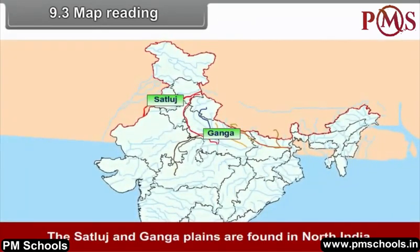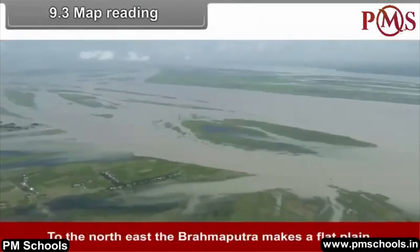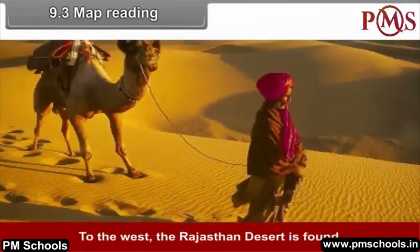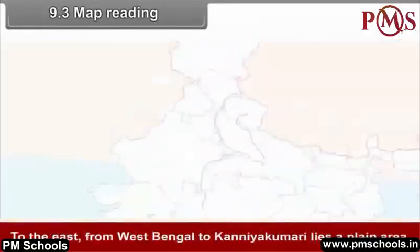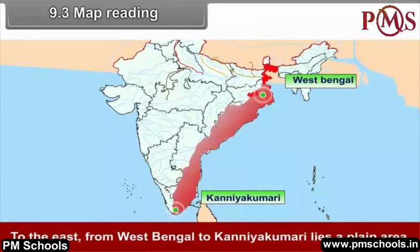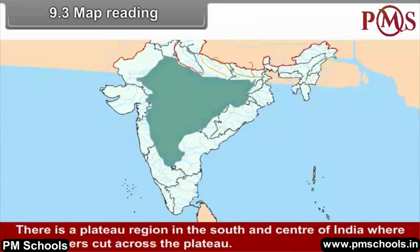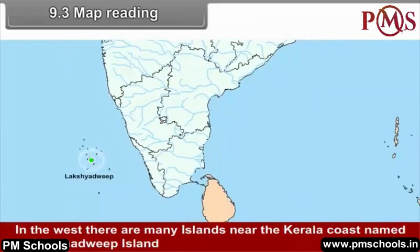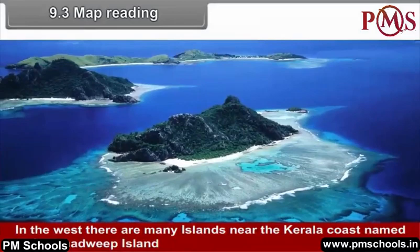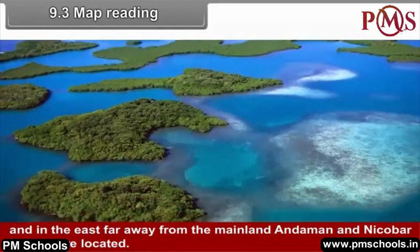The Sutlej and Ganga plains are found in north India. To the north east, the Brahmaputra makes a flat plain. To the west, the Rajasthan desert is found. The Rann of Kutch is a marshy area situated in the west. To the east, from West Bengal to Kanyakumari lies a plain area, which is broader than the west coastal strip. There is a plateau region in the south and centre of India. In the west, there are many islands near the Kerala coast called Lakshadweep Islands, and in the east, the Andaman and Nicobar Islands are located.